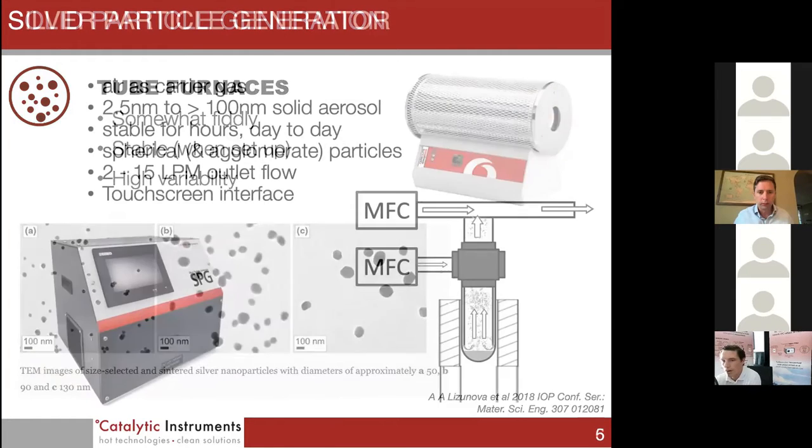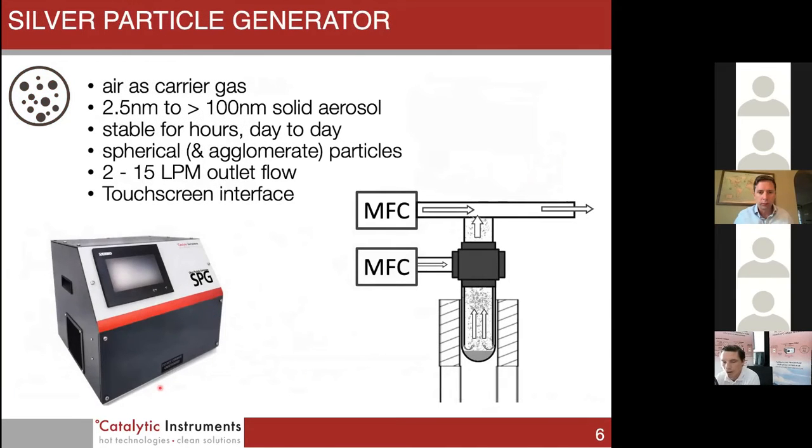This is the direction that the Silver Particle Generator has gone in. It uses air as a carrier gas, aerosol size range is somewhere in the region of 2.5 to 100 nanometers of solid aerosol. Stable for hours day to day, the aerosol is spherical and predicted diameters in the larger phase. Aerosol flow is between 2 and 15 liters per minute that can be controlled via dilution built in and integrated into the device, and it has a touchscreen interface.